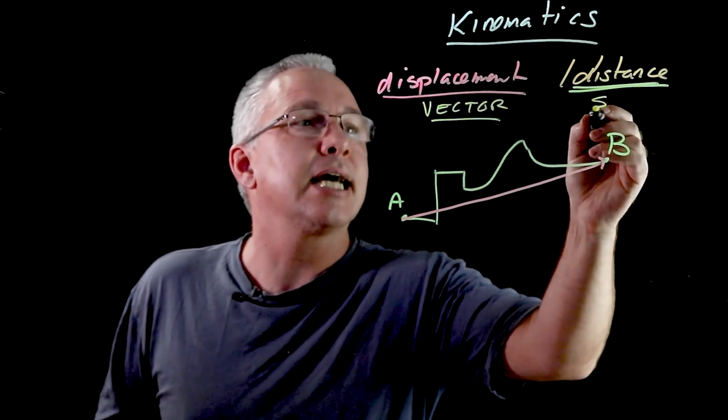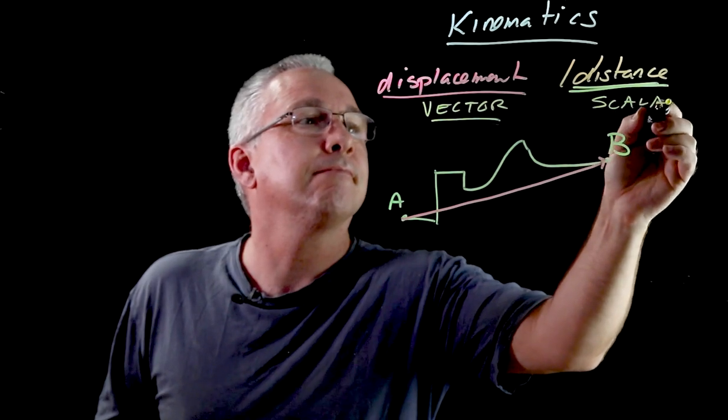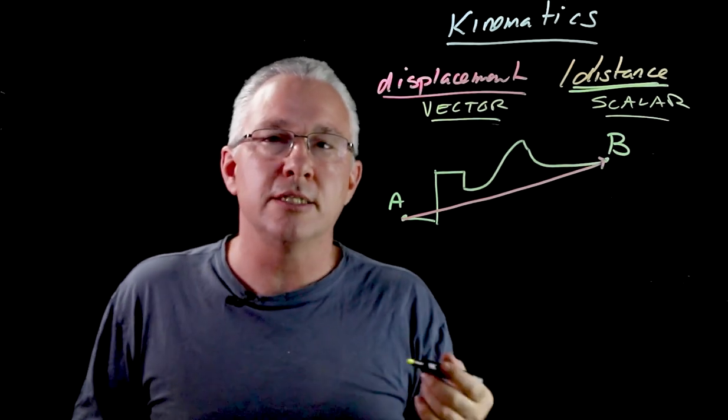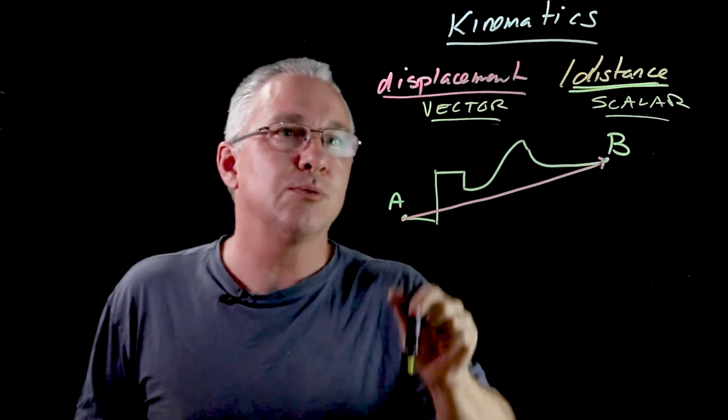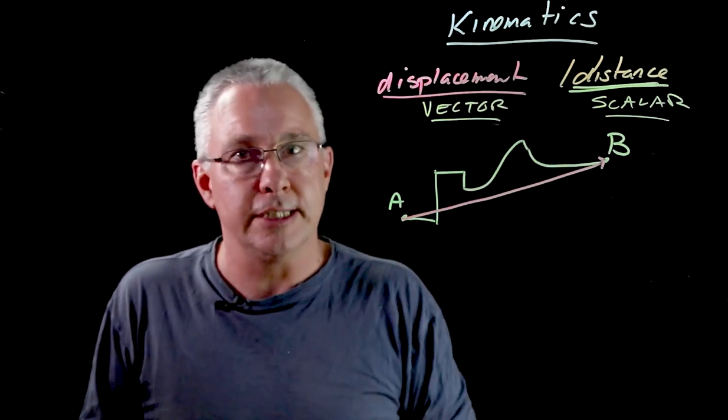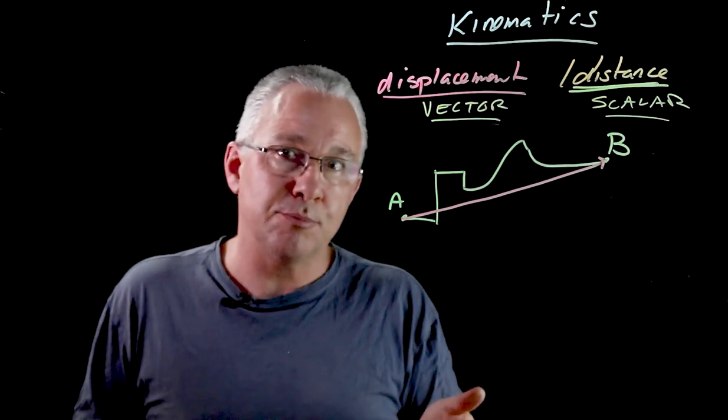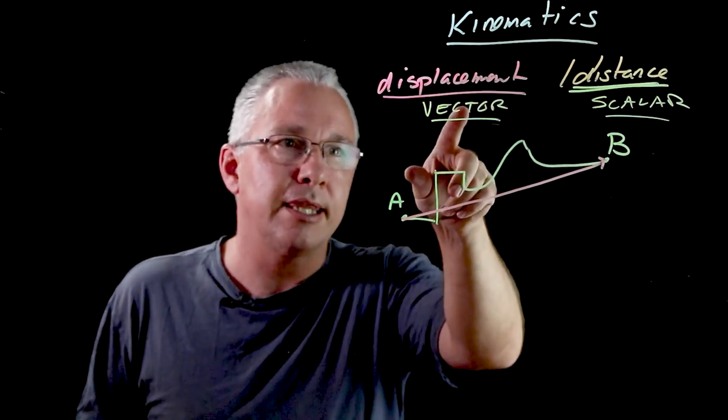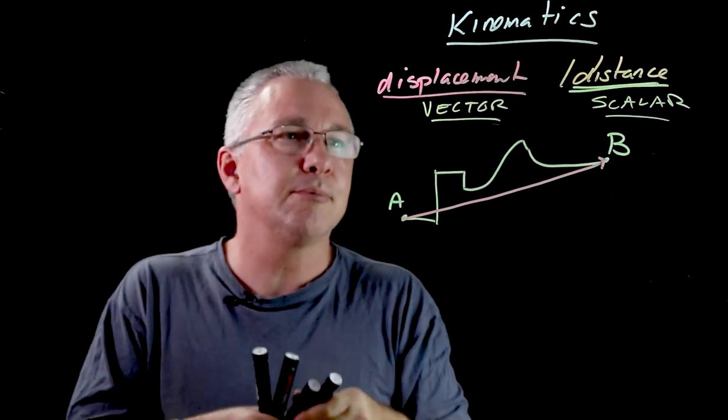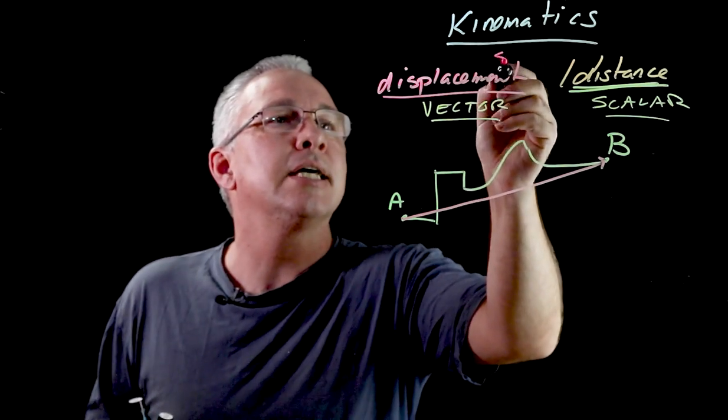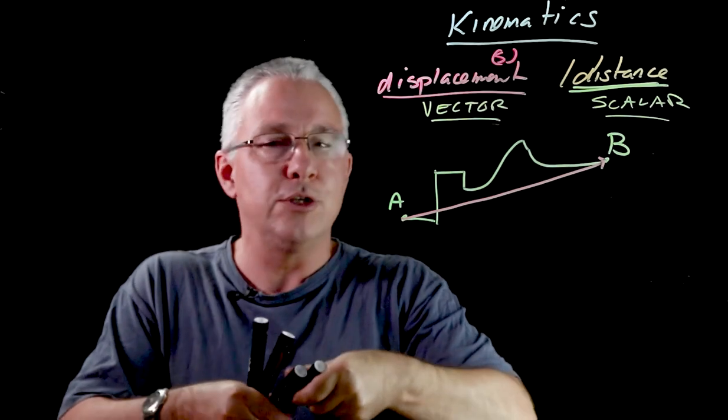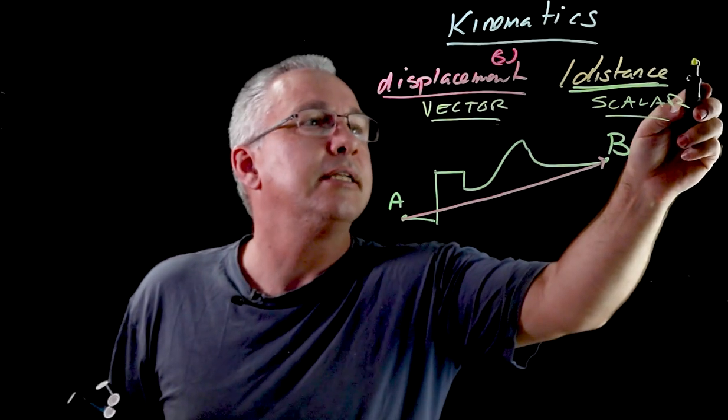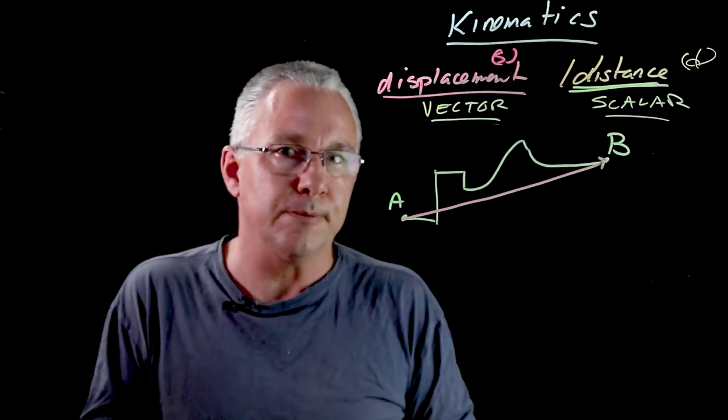Whereas distance is a scalar. It's just the size, there's no direction related to it. So generally in physics we are interested in displacement, not distance. Now there are some exceptions to the rule but generally that's the one you look at. And as I said before the symbol we use there is S and in distance often the symbol we use is D just to be different, to differentiate between the two.